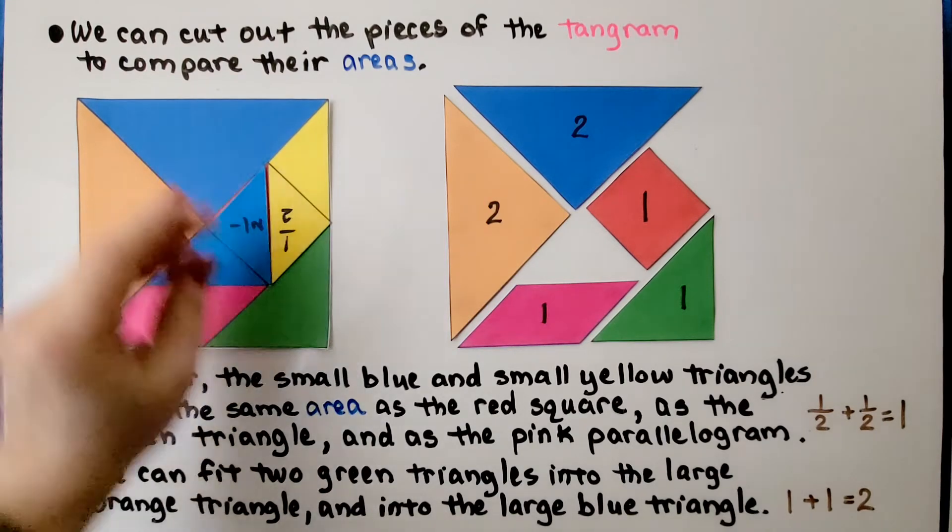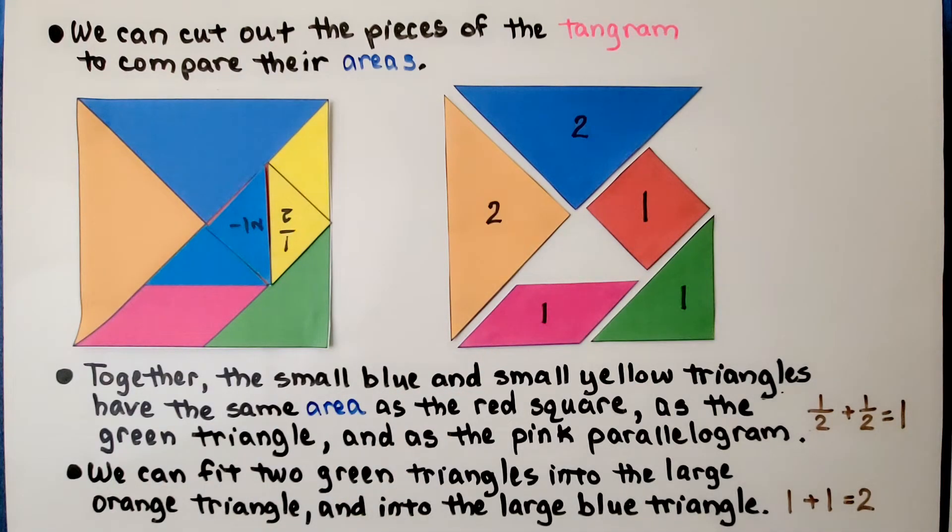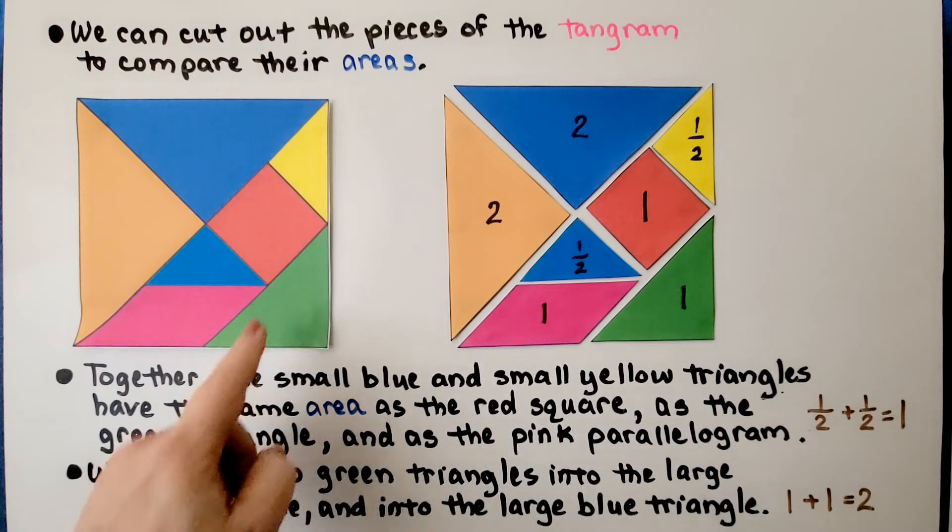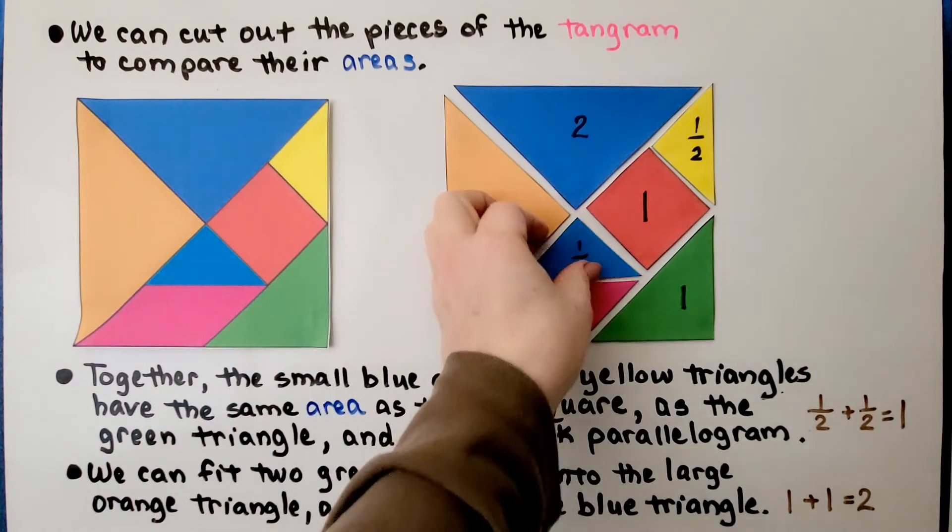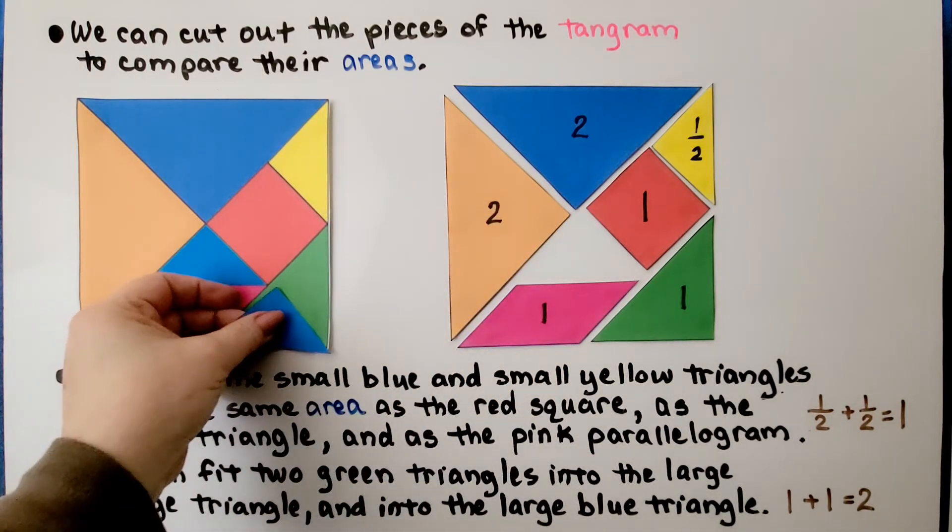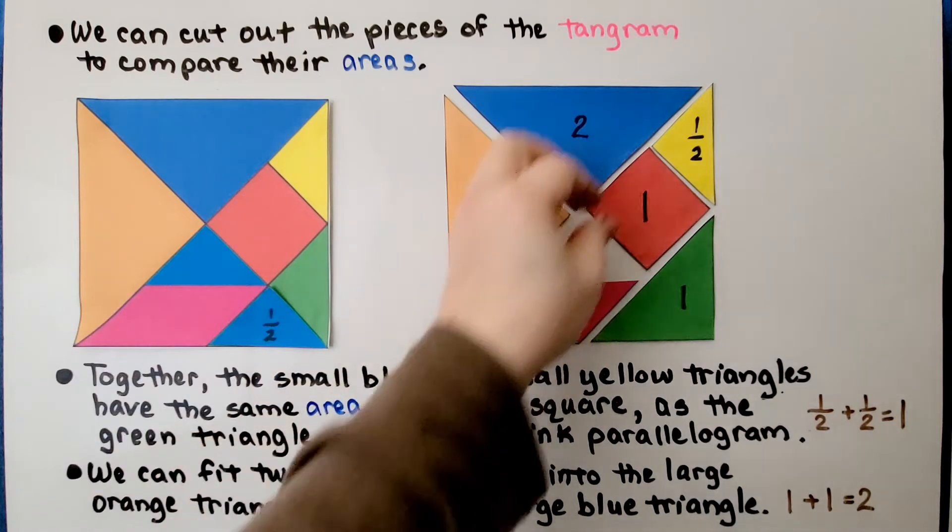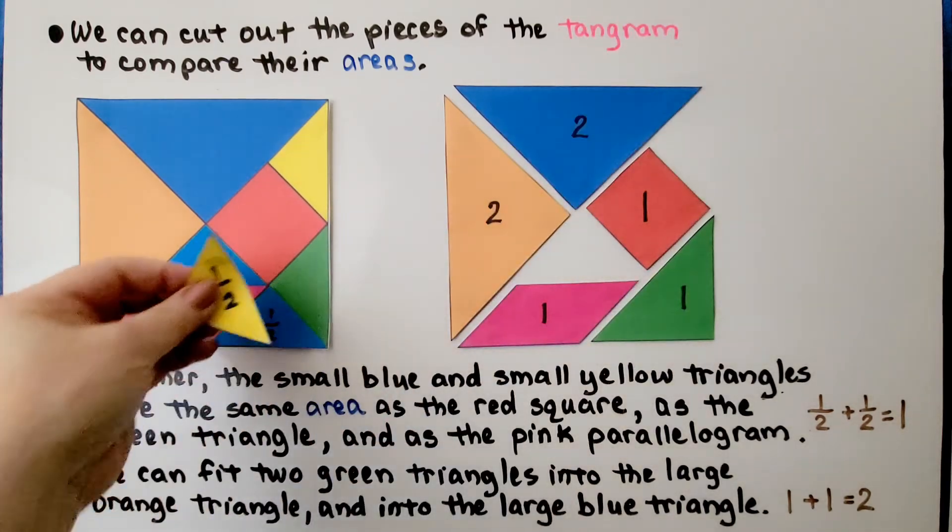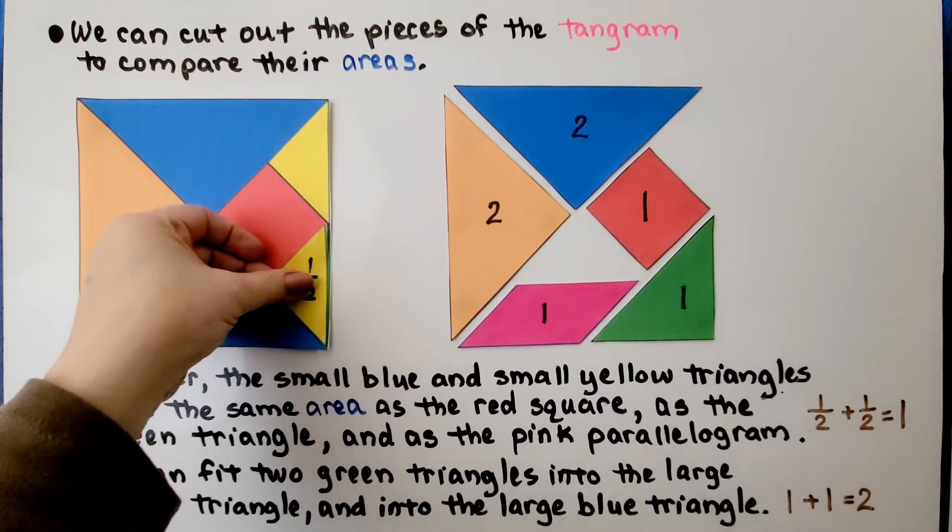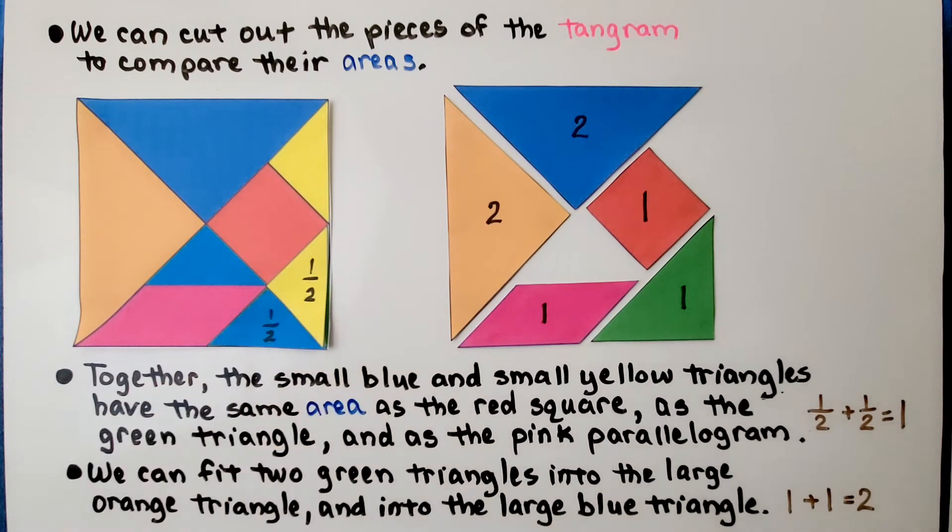Which is one square unit. They also have the same area as this green triangle. We can take this blue small triangle and put it here, and we can take this yellow one and put it here, and see that it has the same area.